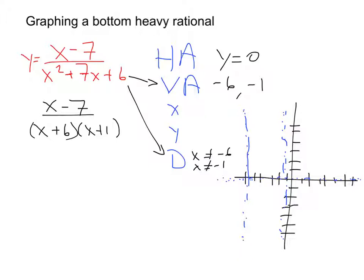So now I'm going to do my x and y-intercepts, which again never change. So for my y-intercept, I plug 0 in for x. So if I plug 0 in for x, can you see I'm going to get negative 7 over 6, which is about negative 1.2. So on my y-axis, I'm going to put a point right here at negative 1.2.